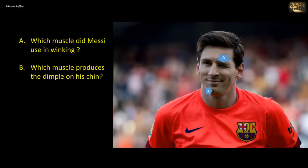Which muscle is used in winking? The muscle is the orbicularis oculi. It has a palpebral part, which is present in the lid, and an orbital part, which surrounds the orbit. The palpebral part is used for blinking, but the orbital part is used for winking.